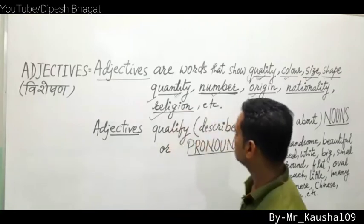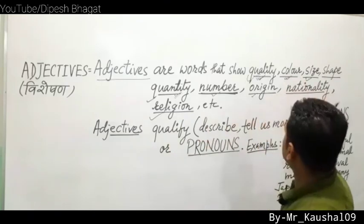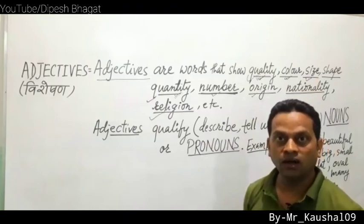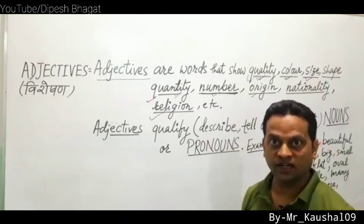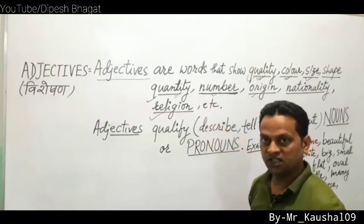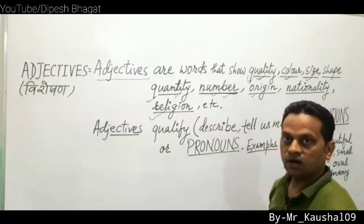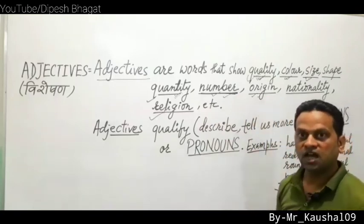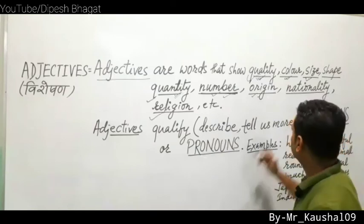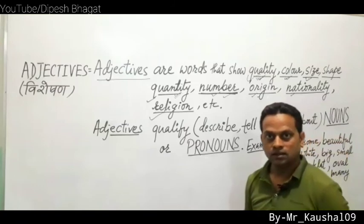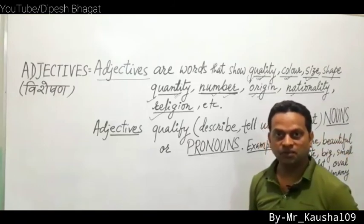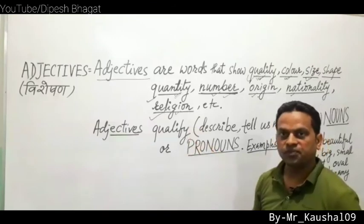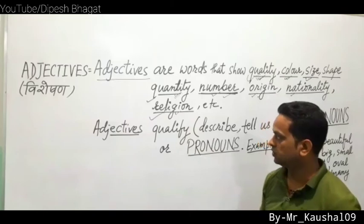Summary of adjective types with examples — color: red, black, blue; size: big, small, enormous, gigantic; quantity: much, little; number: five, four, many, few; origin: Chinese, Japanese, American; nationality: Indians, Nepalese, Pakistanis; religion: Muslims, Hindus, Buddhists.